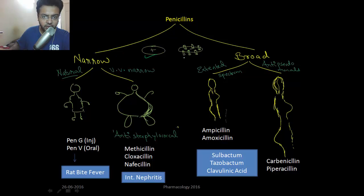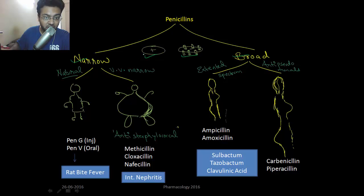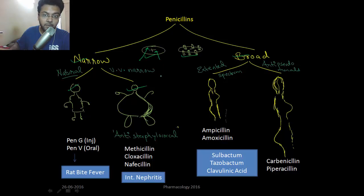Penicillins are divided into narrow spectrum and broad spectrum based on their susceptibility to gram-positive and gram-negative bacteria. They are called narrow spectrum because they have restricted activity towards gram-positive bacteria — either they have old or fat molecules that can only enter the cell wall of gram-positive bacteria.